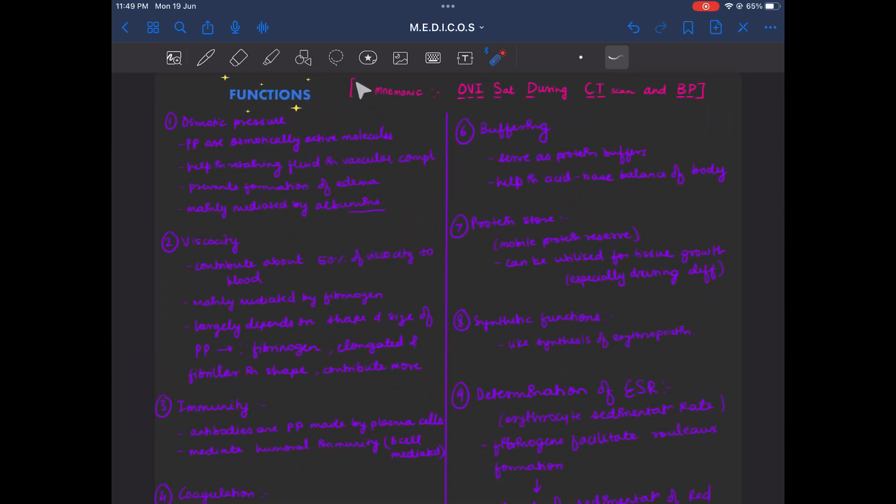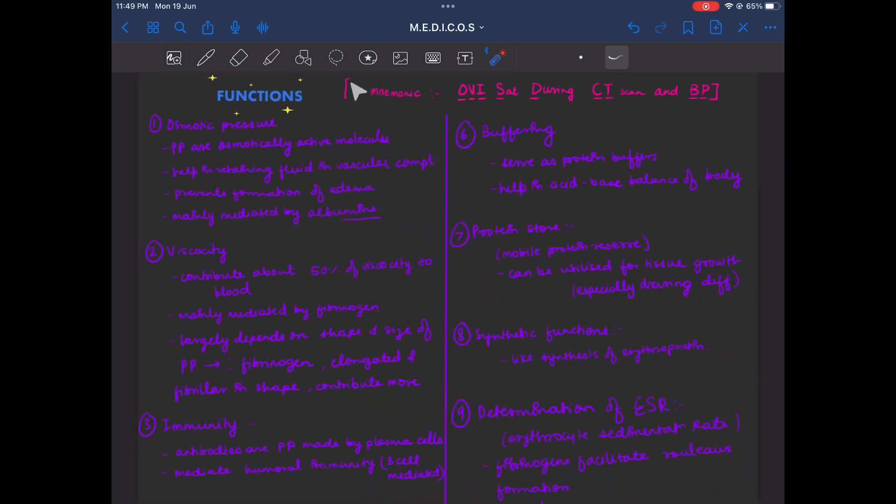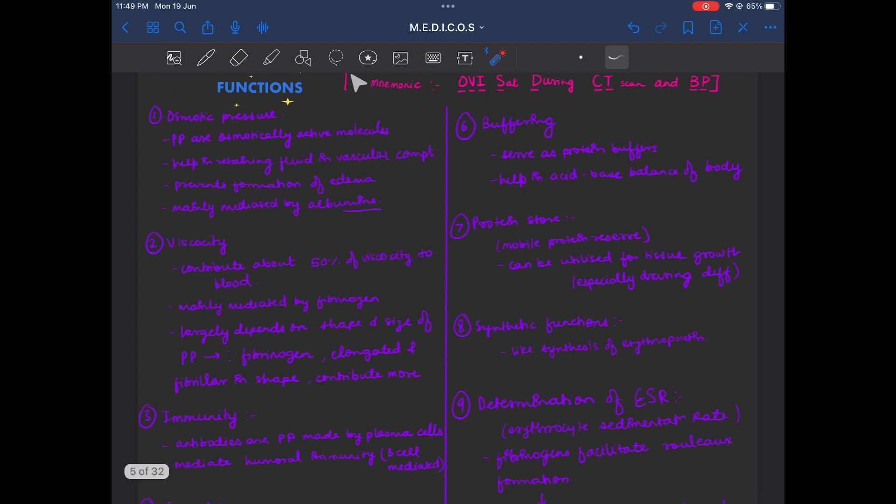Important topic is functions of plasma proteins. There are 9 important functions. First is osmotic pressure. Albumin mainly maintains osmotic pressure, which is retaining fluid in the vascular compartment. It prevents the formation of edema and mainly is mediated by albumin.